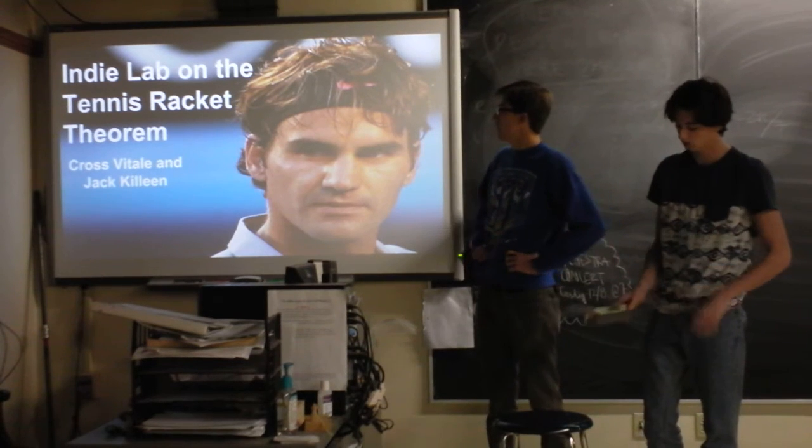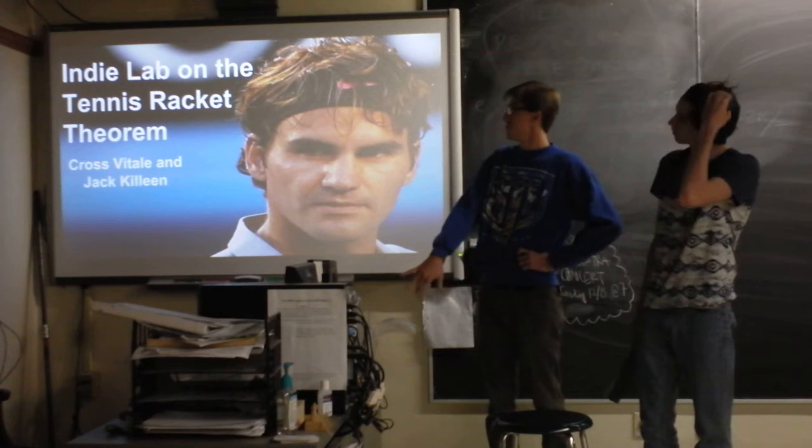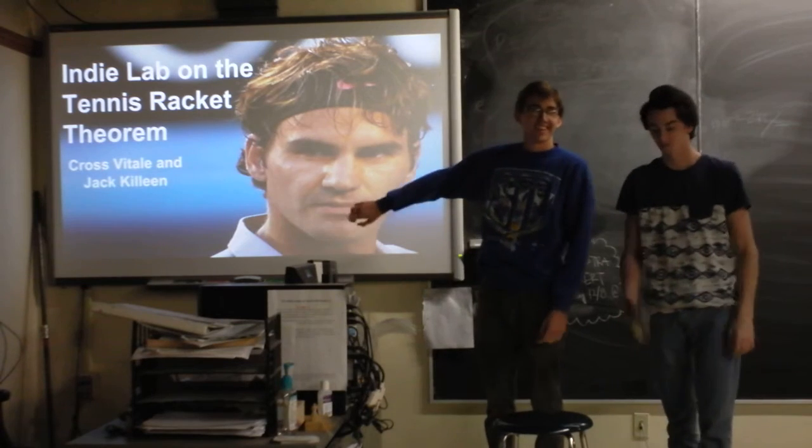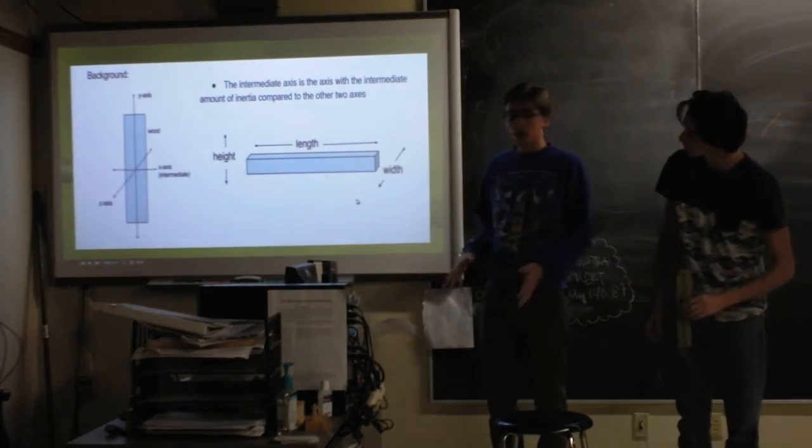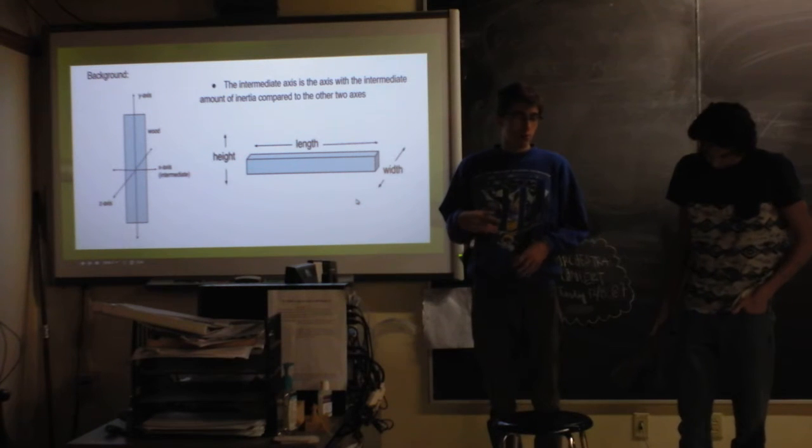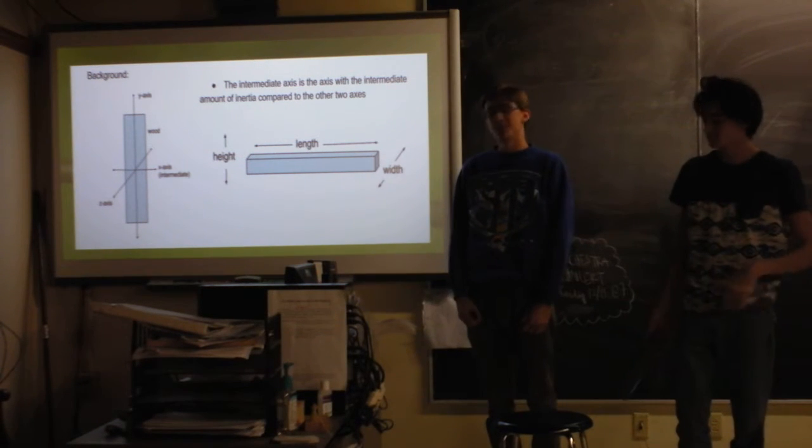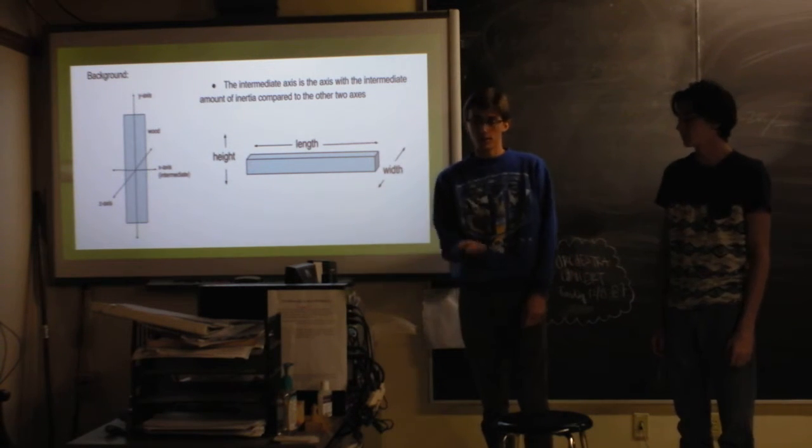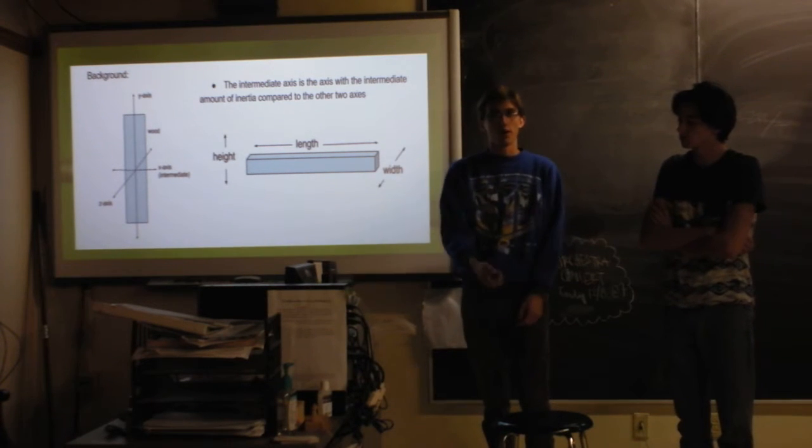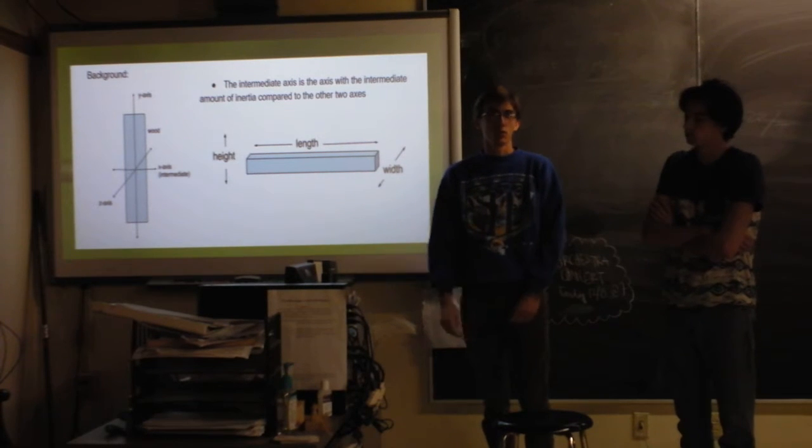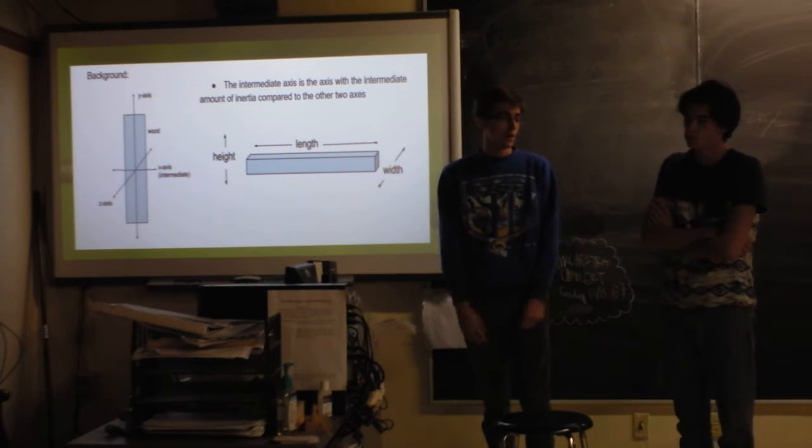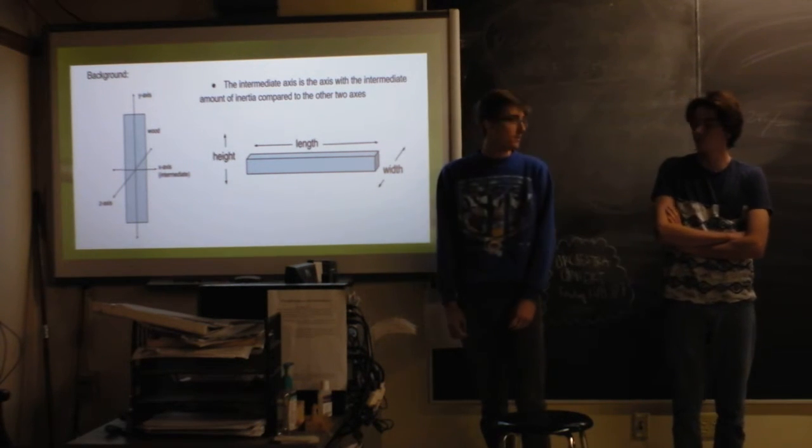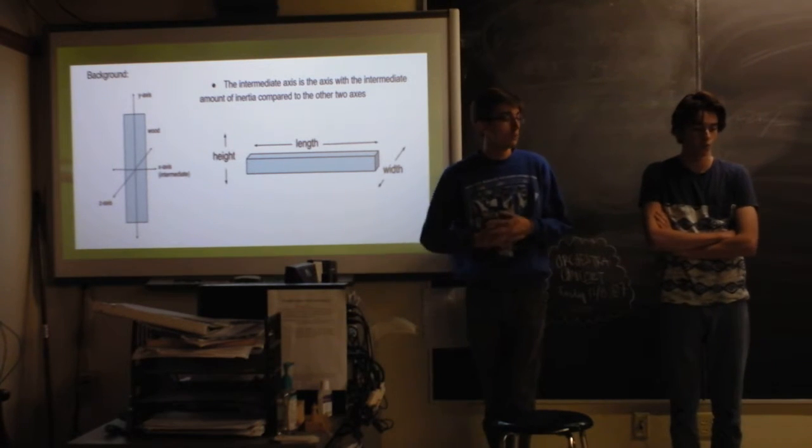Alright, so we did our lab on the Intermediate Axis Theorem, otherwise known as the Tennis Racket Theorem. Who's that? This is Roger Federer, who plays tennis. So this lab originated from all the bored times I was in tennis practice and I would just sit there and kind of flip my racket up in the air. And I noticed that when I held it like this with the frame parallel to the ground, when I threw it up it would rotate in the air when I hadn't put any force in that axis. And I was curious as to why. And so this is what we studied. And after some research we learned about the Intermediate Axis Theorem.